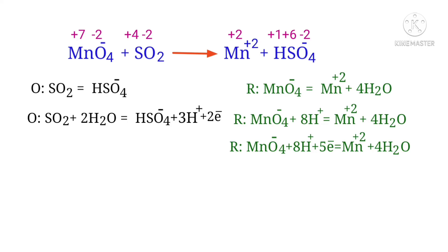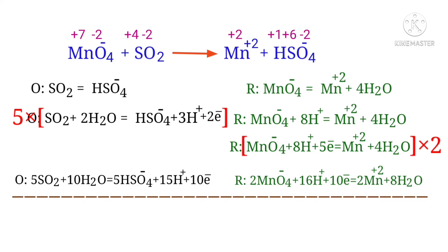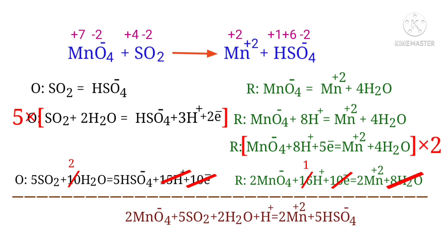Make electron gain equivalent to the electron lost. The electrons gained in the oxidation half reaction must equal the electrons lost in the reduction half reaction. To do this, multiply the oxidation half reaction by a coefficient of 5 and multiply the reduction half reaction by a coefficient of 2. Now you can add both reactions and cancel the same terms. The equation is now balanced in an acidic medium.